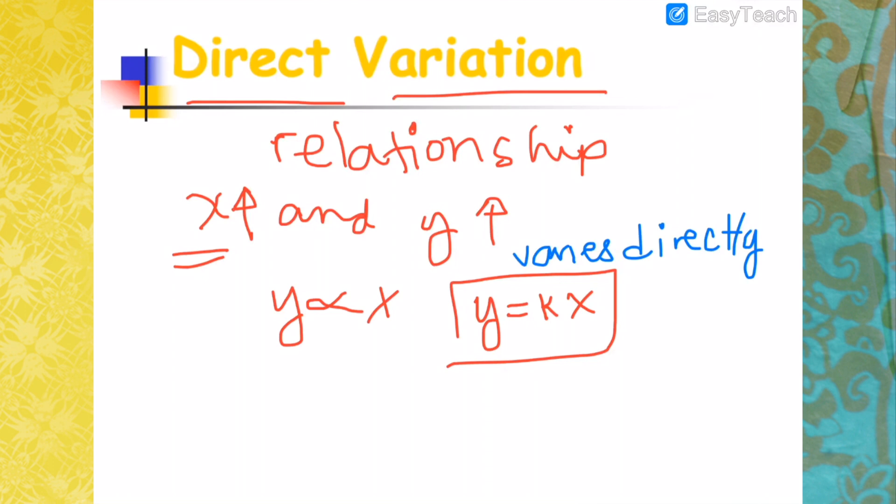So here, there's another way of showing the direct variation formula. You could also rearrange this formula where you have your K equal to Y over X. So since K is a constant, then you can write this as Y1 over X1 equals Y2 over X2.